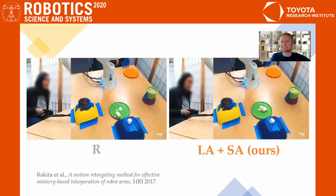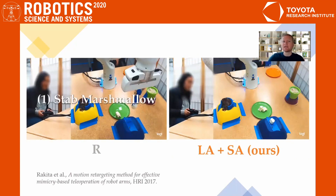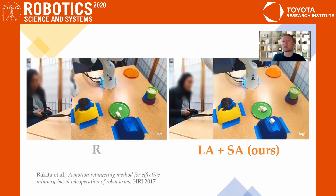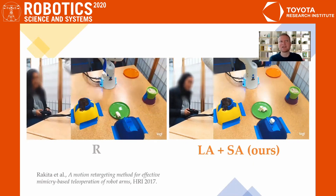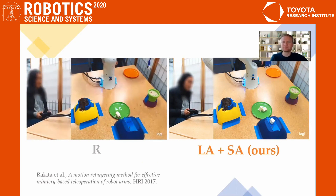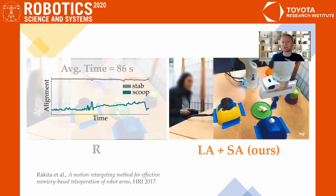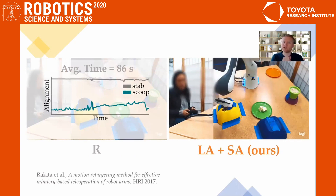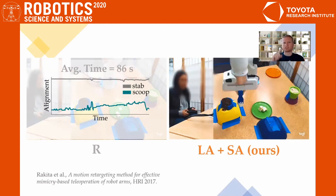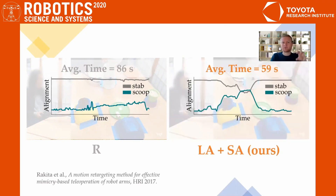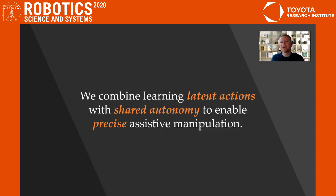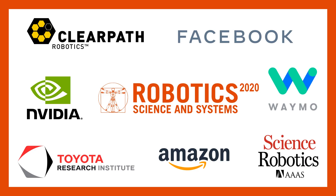We conducted a user study to test if people were able to perform precise manipulation on an eating task. Here I show retargeting, one of the baselines from this user study. In this baseline, the user directly controls the position and orientation of the end effector through a joystick. You can see that they never really change the alignment of the end effector throughout the task and are almost always in a stabbing orientation. Here's that same user with our proposed approach — latent actions and shared autonomy. You'll notice that the robot helps the user reach and maintain the three high-level goals in the space: the marshmallow, the icing, and the rice. The robot enables the humans to perform precise manipulation and alignment at these different goals — they stab the marshmallow but scoop the icing. To summarize, we combine low-dimensional embeddings with goal-directed shared autonomy to enable precise manipulation in assistive tasks.